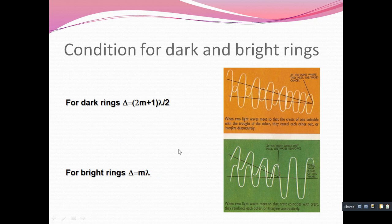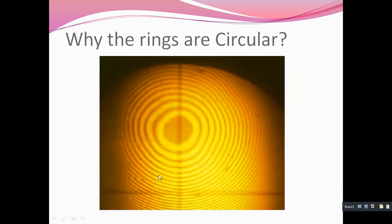All these conditions for thin films have been studied in 12th standard. For dark rings, delta = (2m + 1)λ/2, and for bright rings, delta = mλ. Now, why are the rings circular? The reason is that the surface of the lens is plano-convex, which is circular from the lower side. So whatever locus of the film is generated, it forms circular rings.